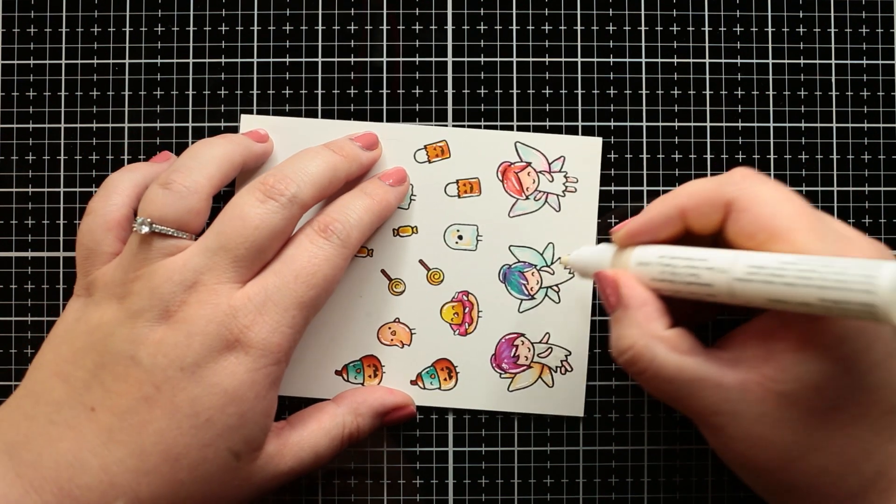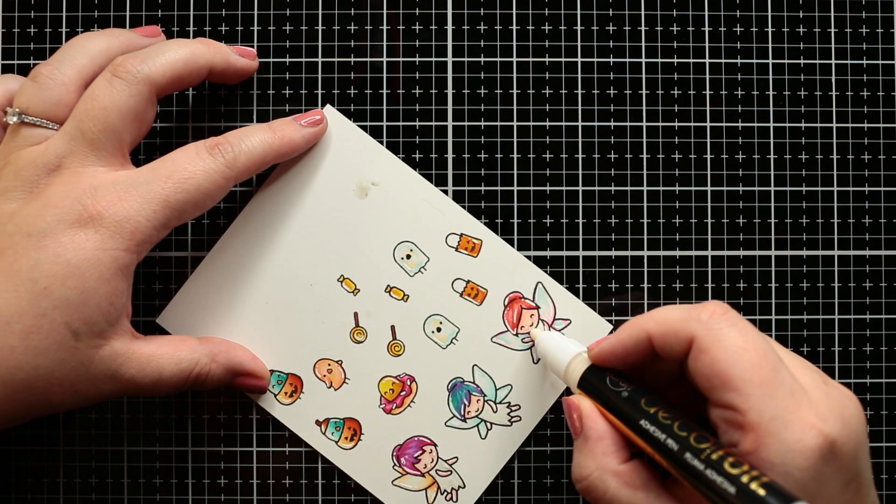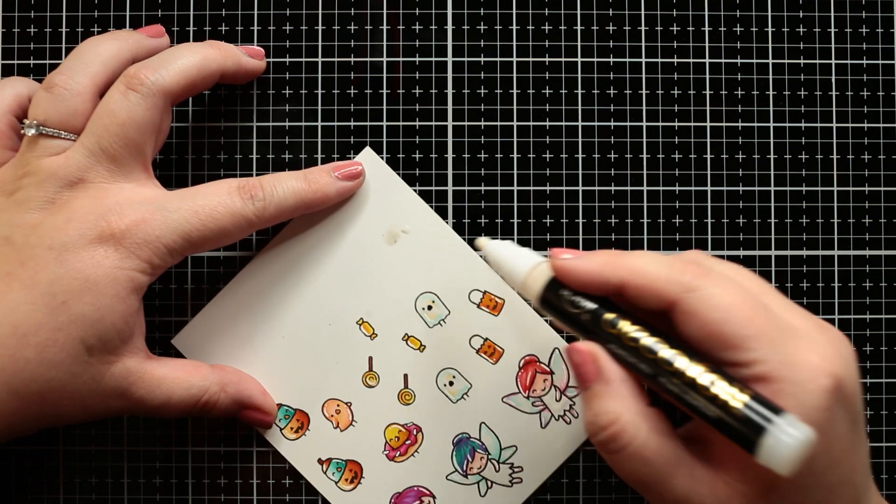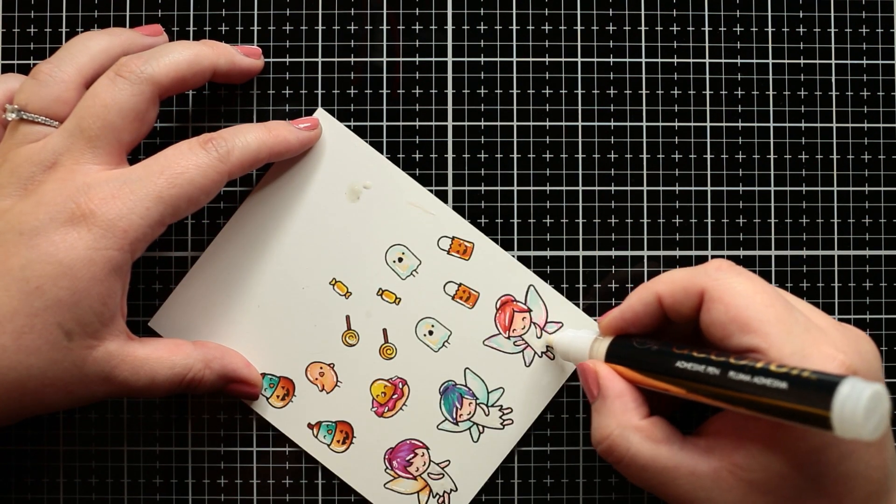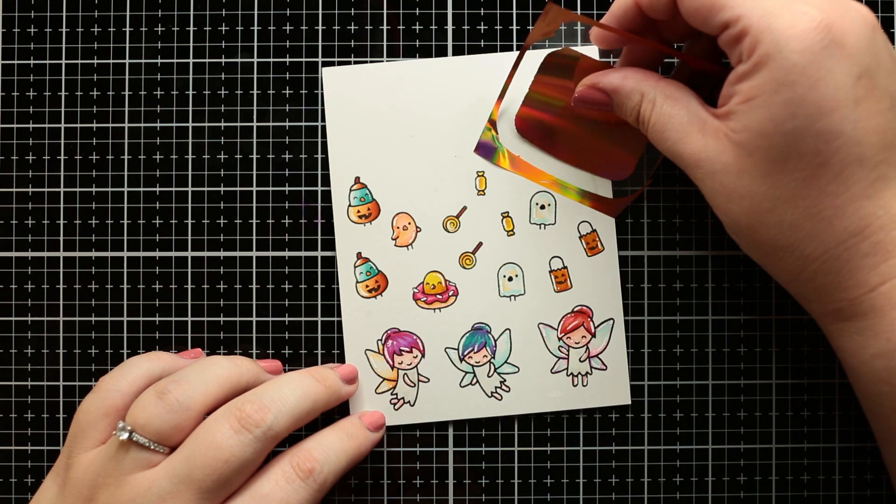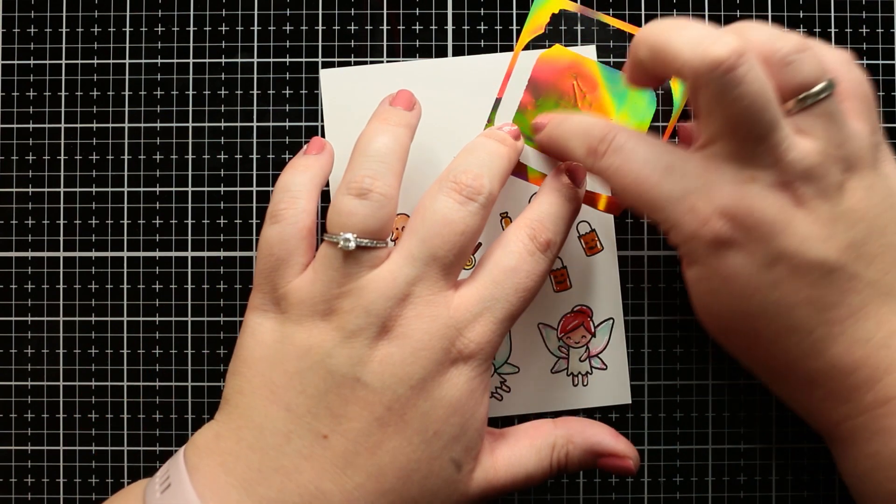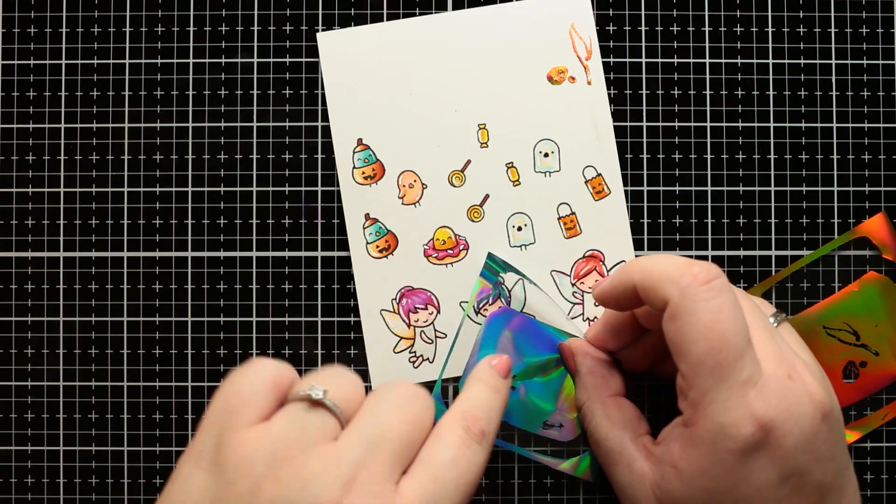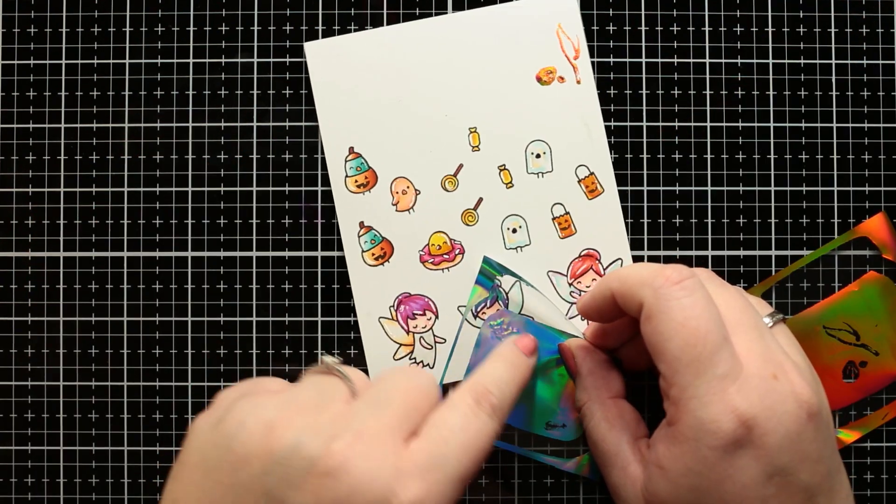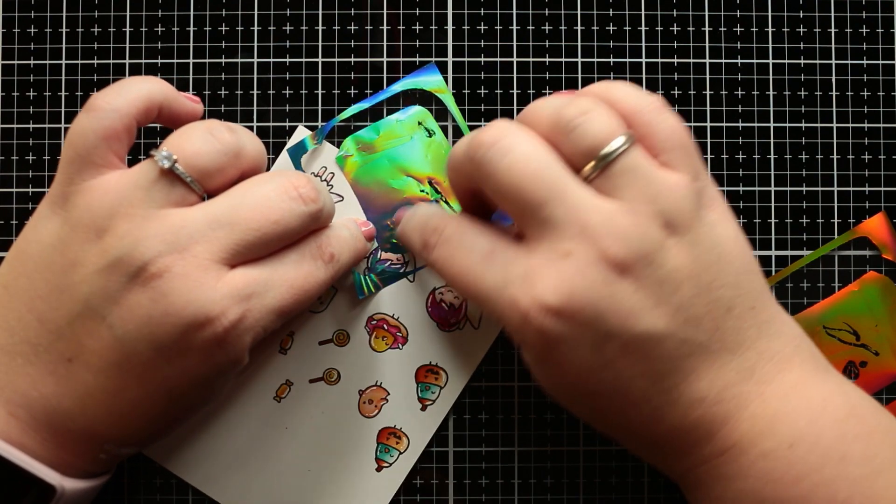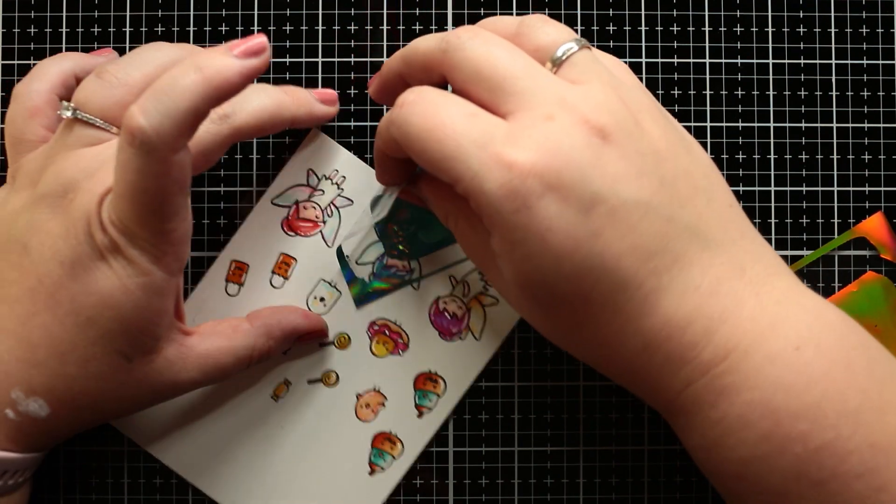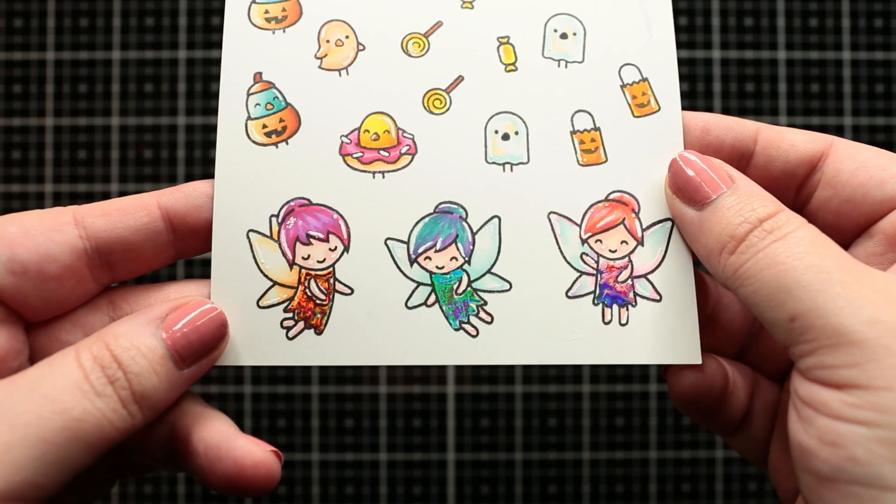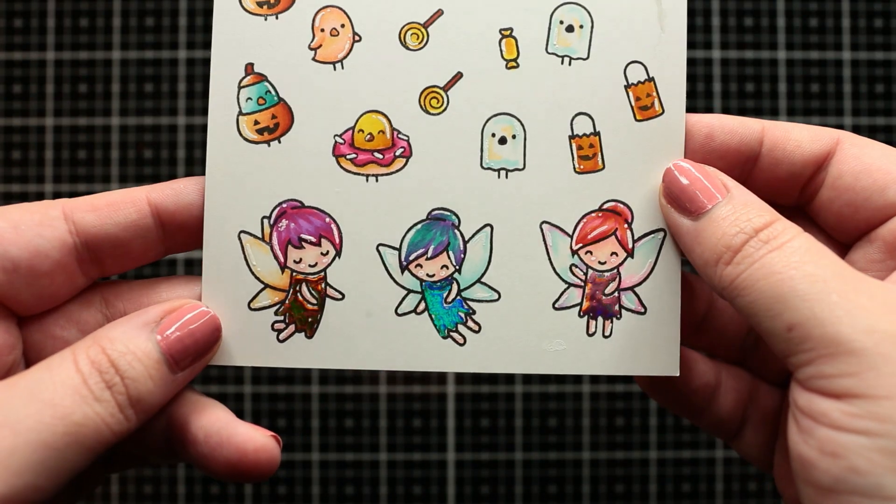Now I'm coloring the dress with the wet Decofoil adhesive pen. I'm trying to follow the outlines but it doesn't need to be perfect. After waiting a few seconds I'm putting a piece of foil on top of the test spot and if it's okay then I'm putting it over the fairy's clothes. Next I rub it well with my fingers. The best part is the reveal. It looks super pretty. Love it.